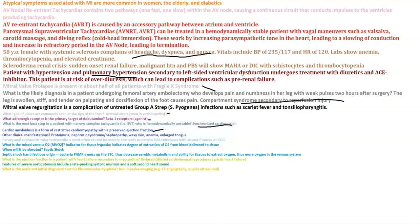The mixed venous oxygen indicator is used for tissue hypoxia — it indicates the degree of extraction of O2 from blood delivered to tissue. It will be elevated in septic shock. In septic shock, PAMPs disrupt the electron transport chain, decreasing aerobic metabolism and the ability for tissues to extract oxygen, so there is more oxygen remaining in the venous system.